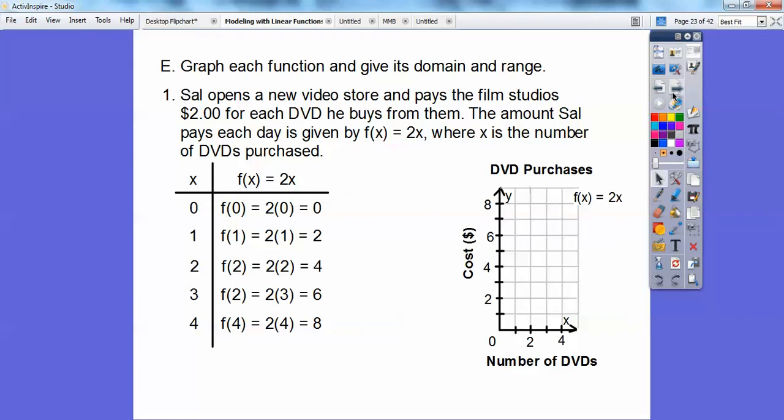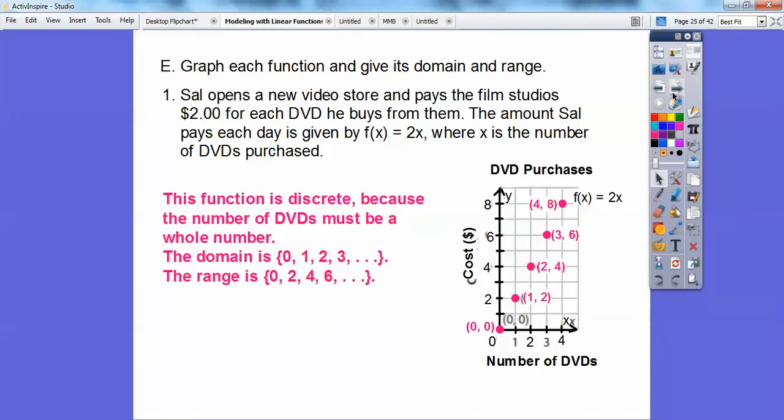When we graph those, we get those points. This function is a discrete function because the number of DVDs must be a whole number. You're not going to buy a piece of a DVD. So you're not going to connect these points. This is a discrete graph. The domain is all your x values: zero, one, two, three, and four. Your range is all the y values: zero, two, four, six, and eight.